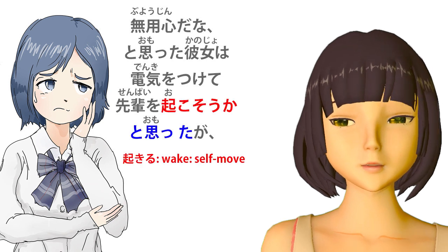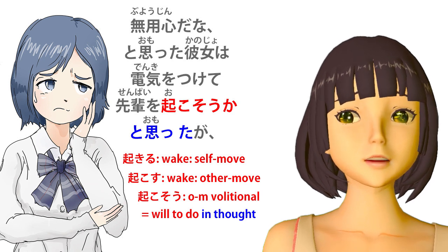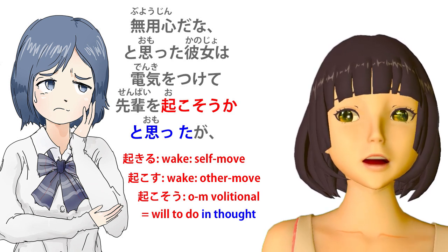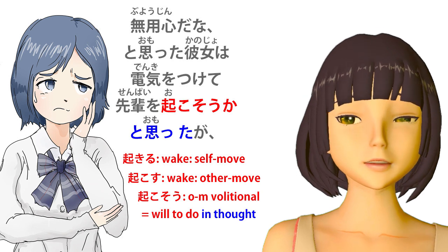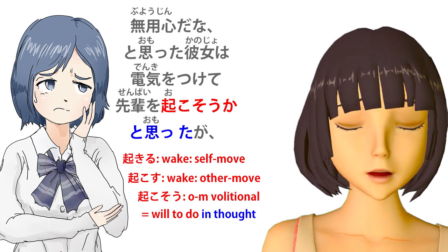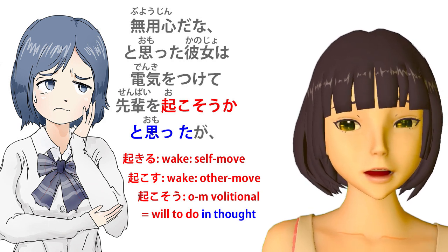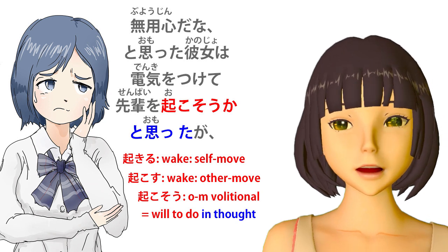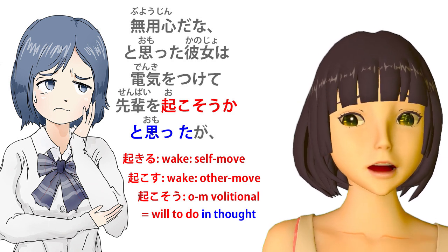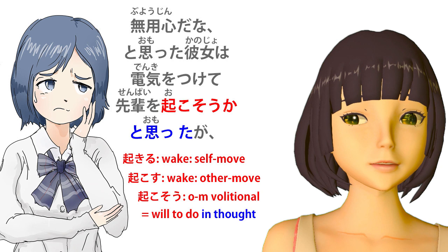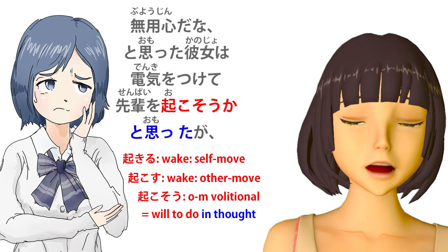Senpai-wo okosou ka. That so ending is a volitional ending. She thought about taking the action of awakening senpai. Okosu means 'to wake someone up.' Okiru means you wake up yourself; okosu — su endings, as we know, mean other-move verbs, so okosu is to wake someone else up. Okosou ka — she's thinking about this action. The ka marks a question, that's to say a proposition. So the proposition was taking the action of waking up senpai.